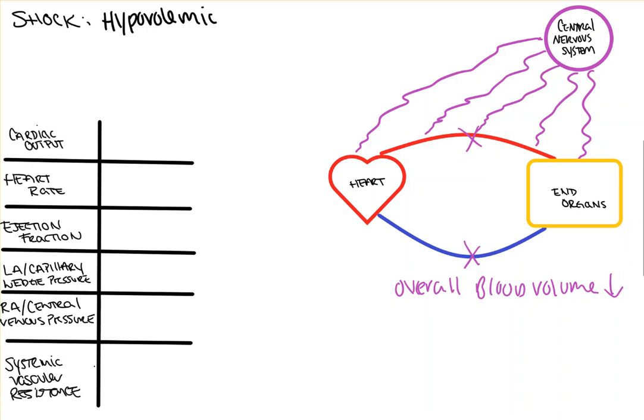So initially, your ejection fraction actually goes up, because as your blood pressure drops, it makes it easier for your heart to push more blood out to the body. Meanwhile, your baroreceptors recognize a drop in blood pressure, and your heart rate goes up in an attempt to rectify this.